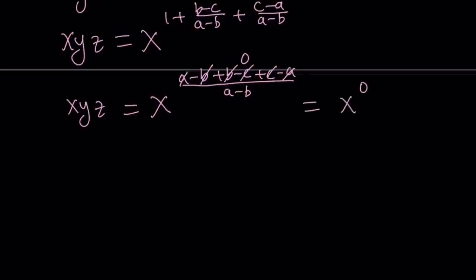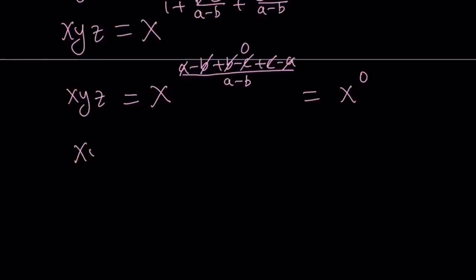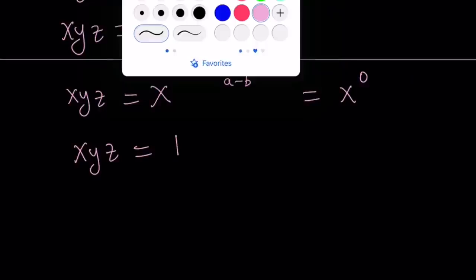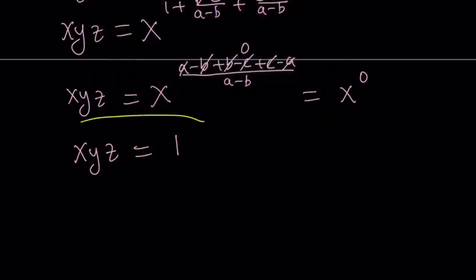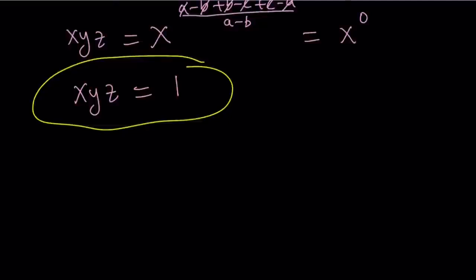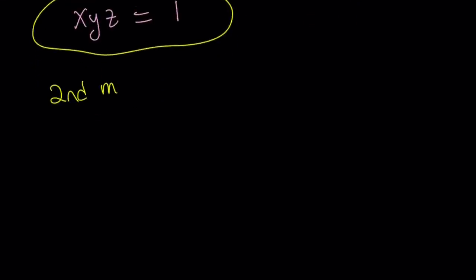Everything in the numerator cancels out leaving us with a 0 so this gives us x to the power 0. But x to the power 0 equals 1 so x, y, z equals 1 from here. Awesome. This brings us to the end of the first method and let's go ahead and talk about the second method.